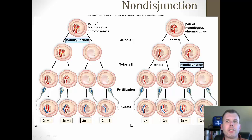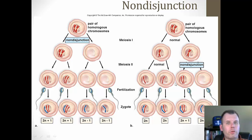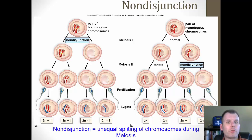The other way non-disjunction could happen is that the normal cell divides normally through meiosis one — you get the normal reduction. Then during the cell division part, after reduction of the number, the cells don't divide the chromosomes evenly. So you get individual chromosomes, and in these two situations you get a normal situation in one cell, three chromosomes in another, and one in another. Any of these possibilities could occur depending on where non-disjunction happens — either in the first or second stage of meiosis — and you can see what would happen to the zygote.